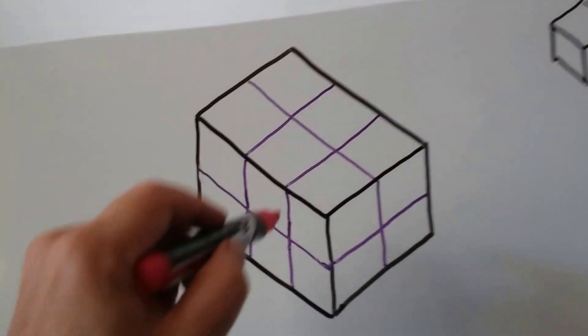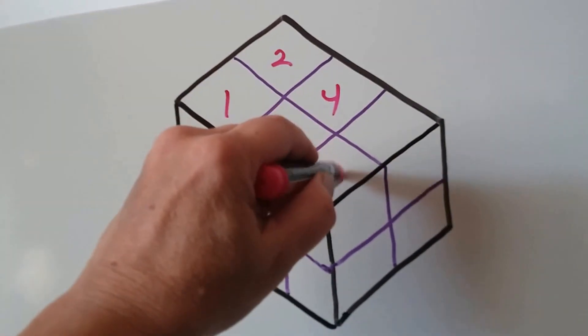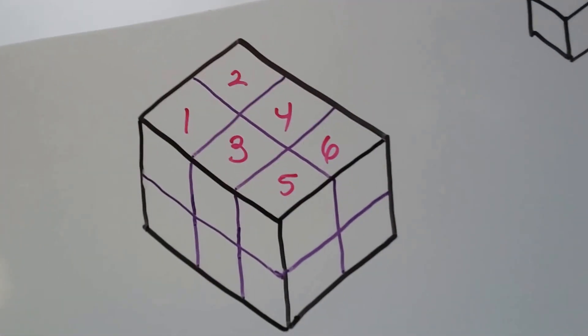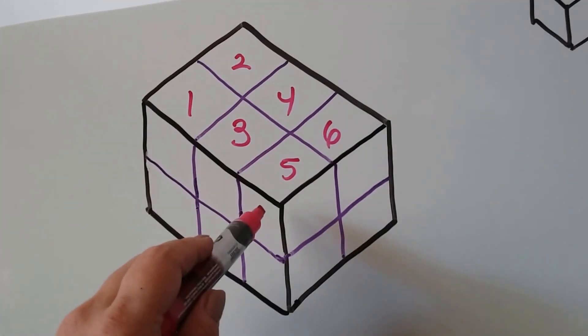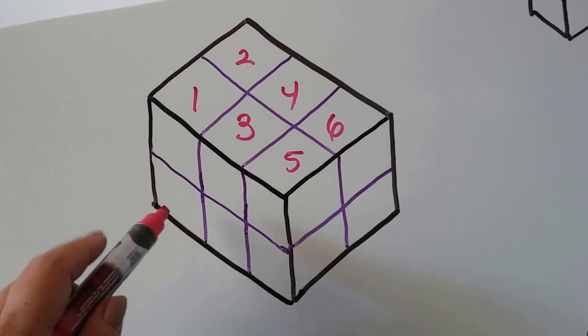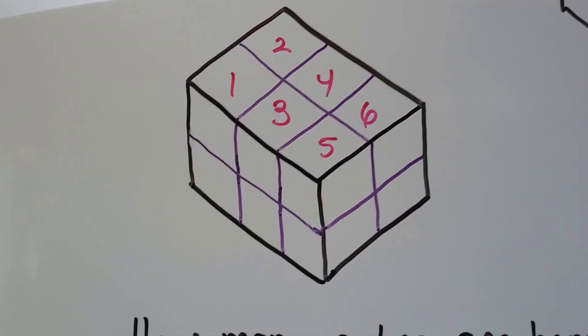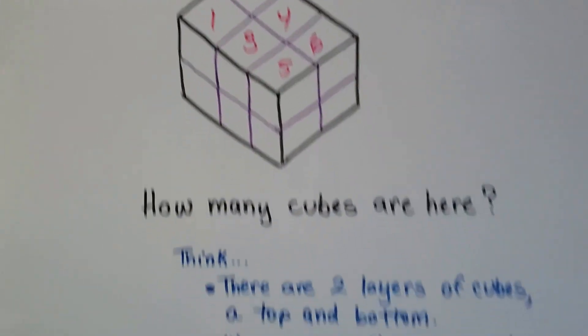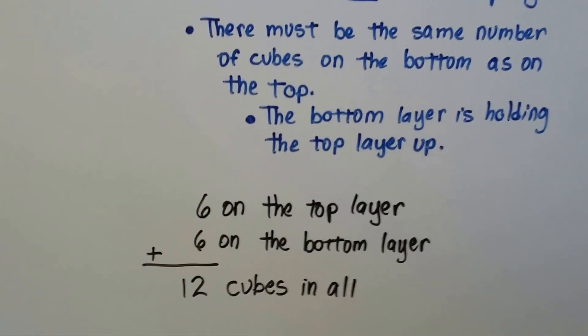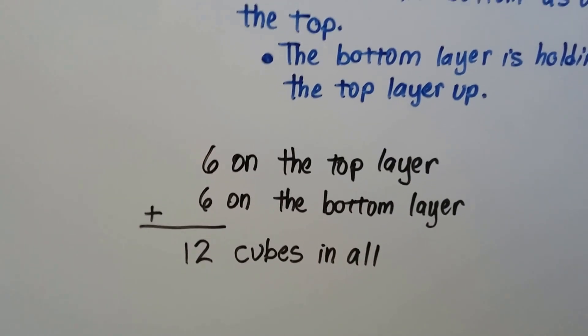So if we've got one, two, three, four, five, six cubes on the top. See, this is the side of cube five and the front of cube five. See? Then we've got six cubes on the top. There must be six cubes on the bottom. And six cubes on the top layer and six cubes on the bottom layer. Well, that's twelve cubes in all.